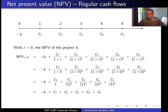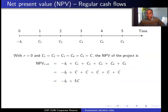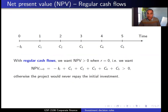Let's look at the net present value of this project when the interest rate is zero and when the interest rate is equal to infinity. When the interest rate is equal to zero, the NPV of the project is equal to the sum of all its cash flows. If the cash flows are the same in each period, the NPV at zero is minus the initial investment plus five times the cash flow received every period. With regular cash flows, NPV is positive at a discount rate of zero when the sum of all cash flows is positive.